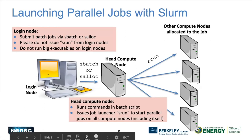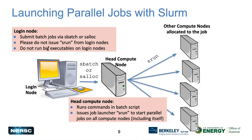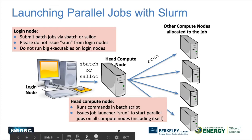On login nodes, you submit with sbatch or salloc. Do not run big executables on login nodes — it's a shared resource and impacts other users' interactive response. Don't run srun directly on login nodes. After sbatch or salloc, you get onto the head compute node of the allocated compute pool. Everything in your batch script except the srun line runs on this head compute node. When you issue the srun command, it starts parallel jobs on all compute nodes including the head compute node, distributing the work. After srun finishes, any subsequent commands run on the head compute node again.